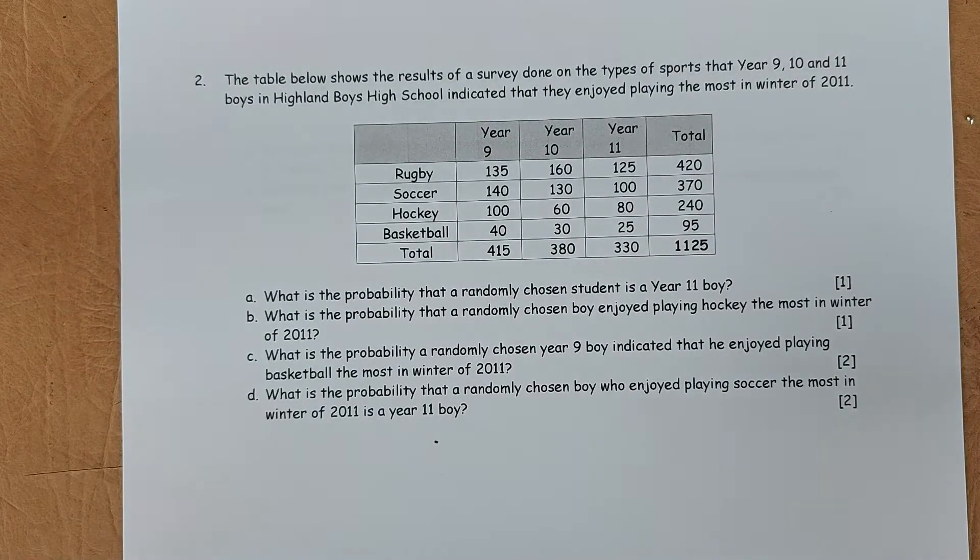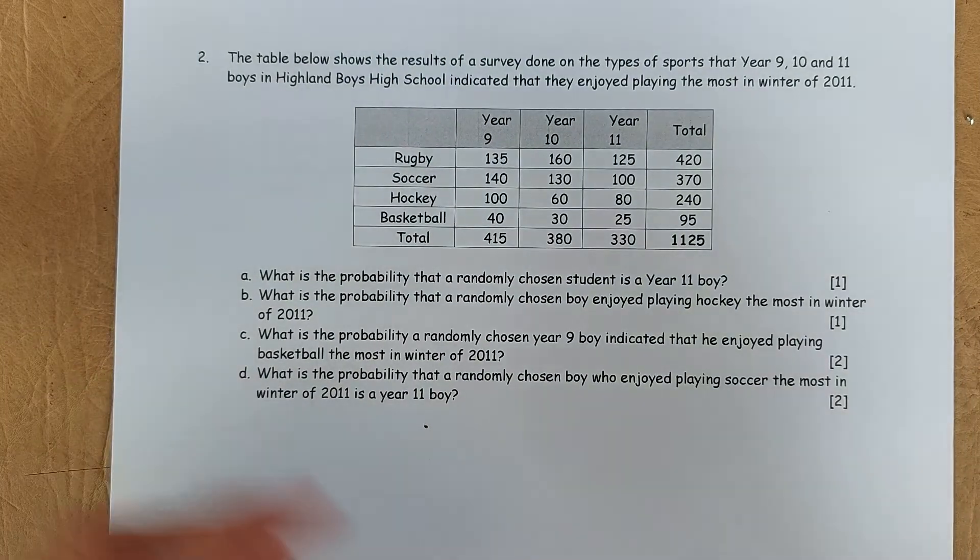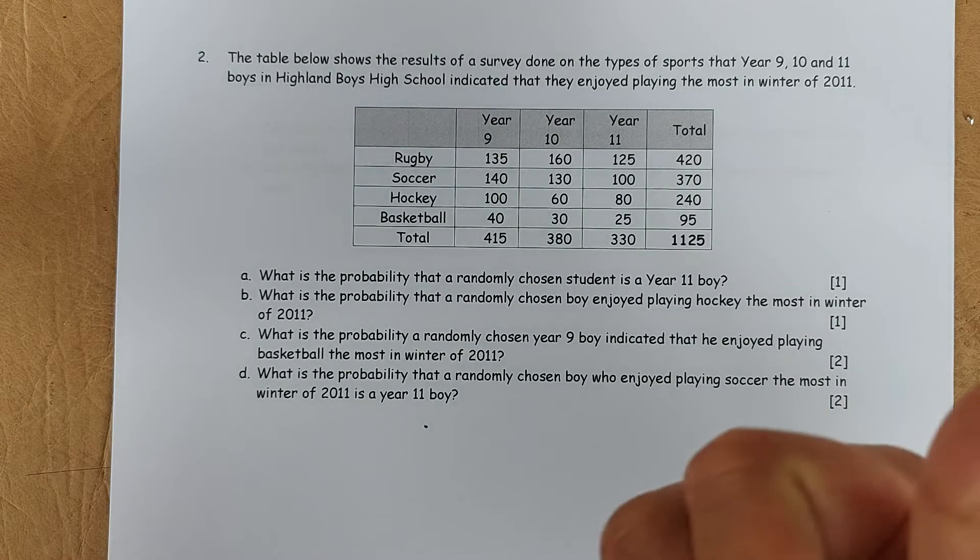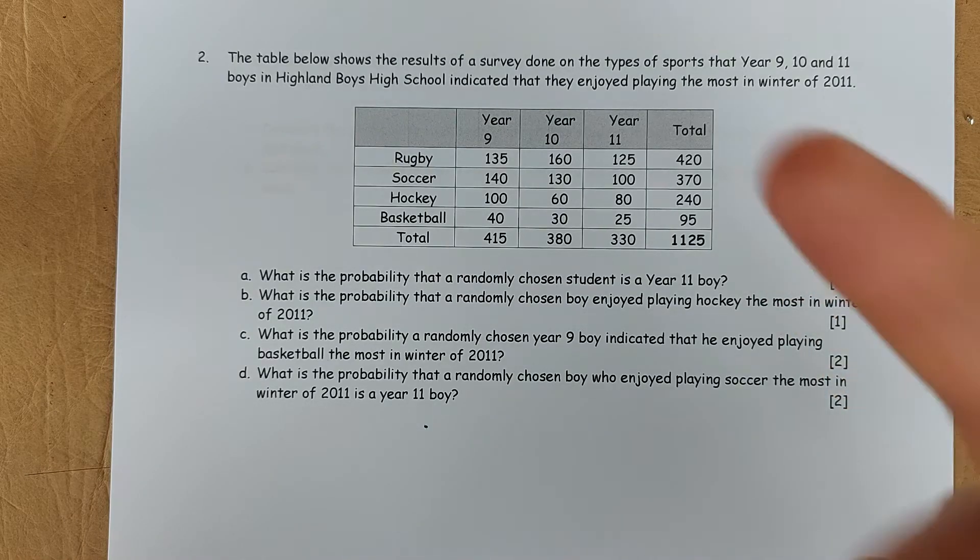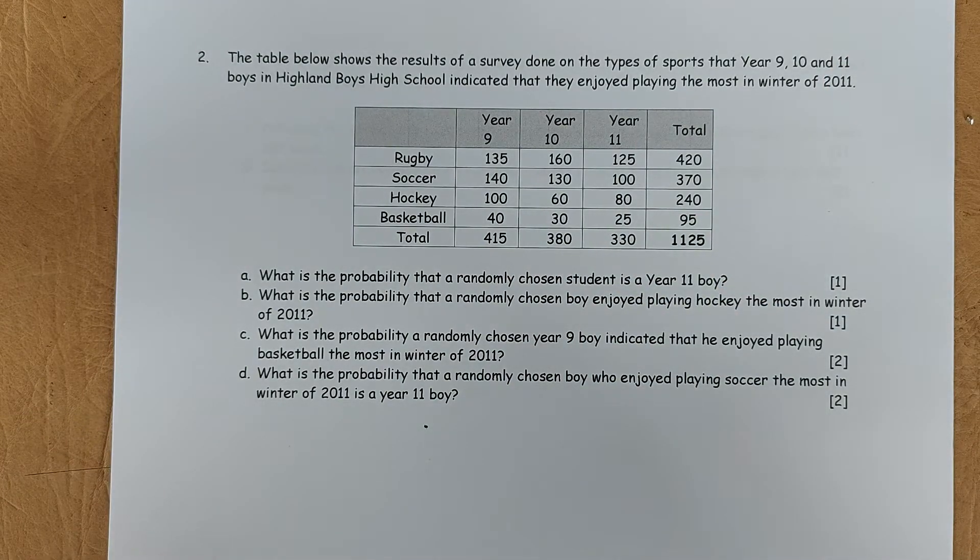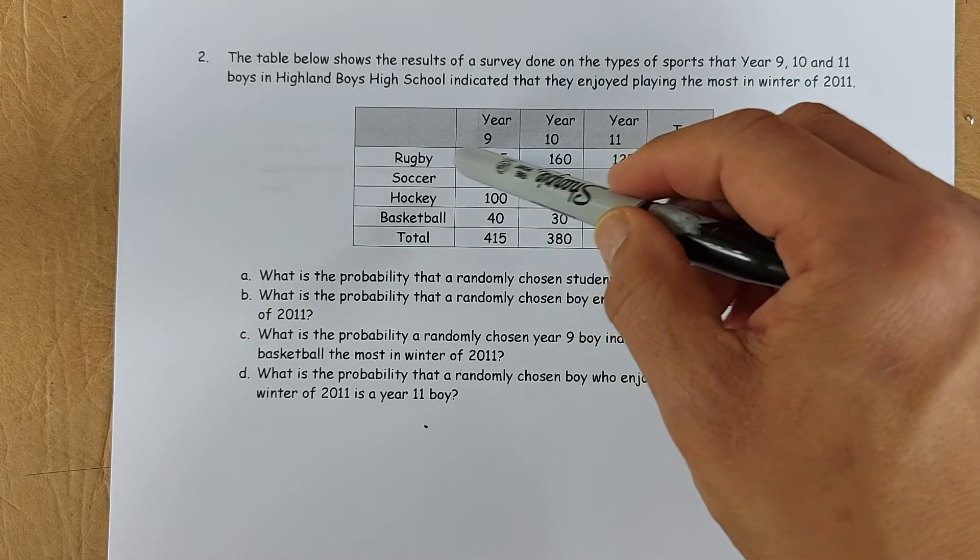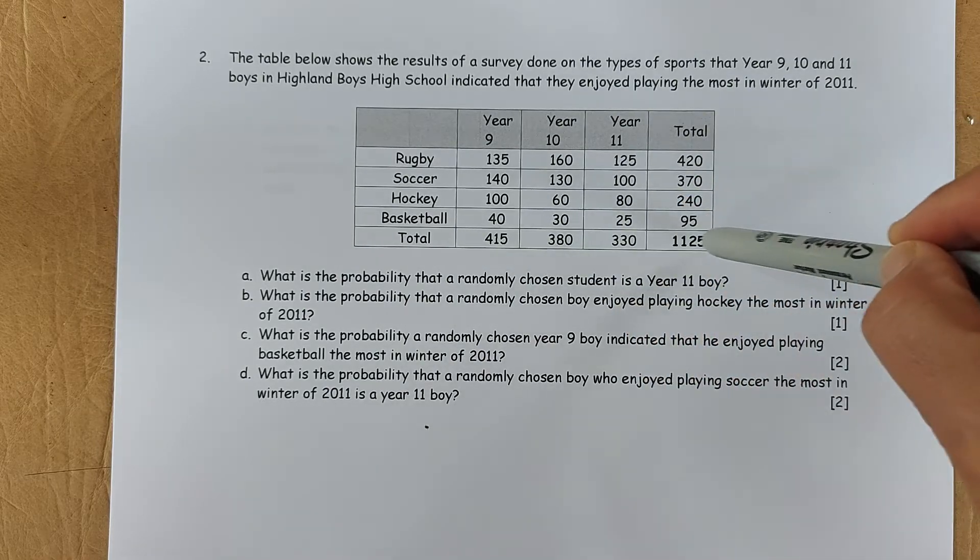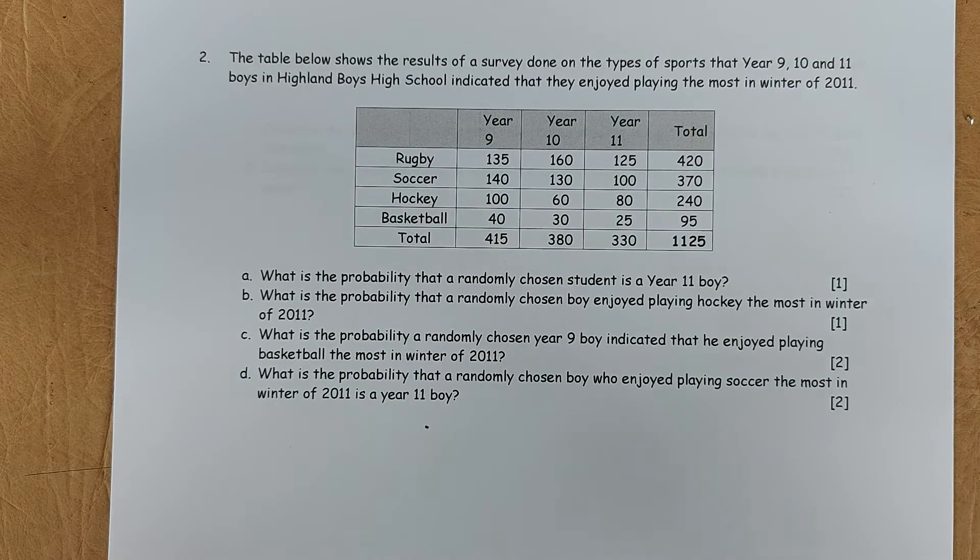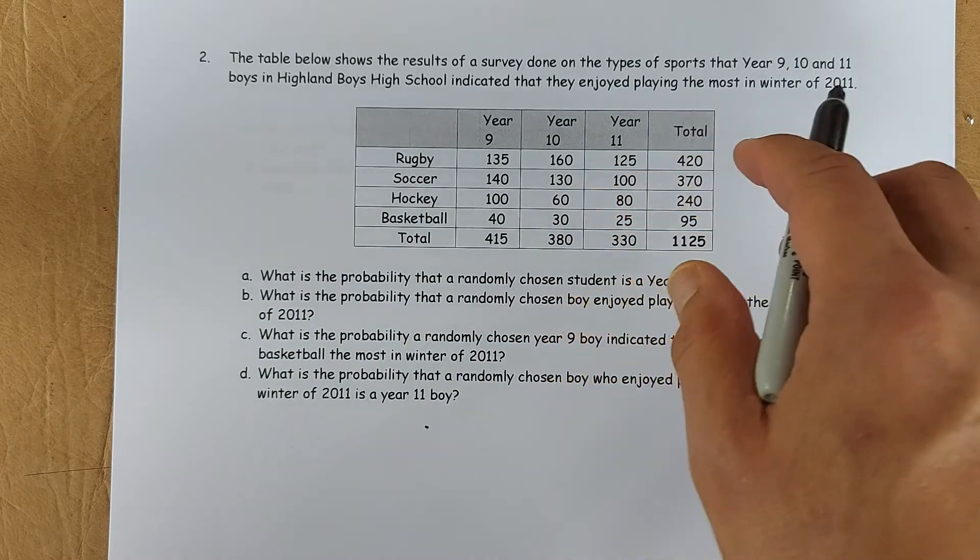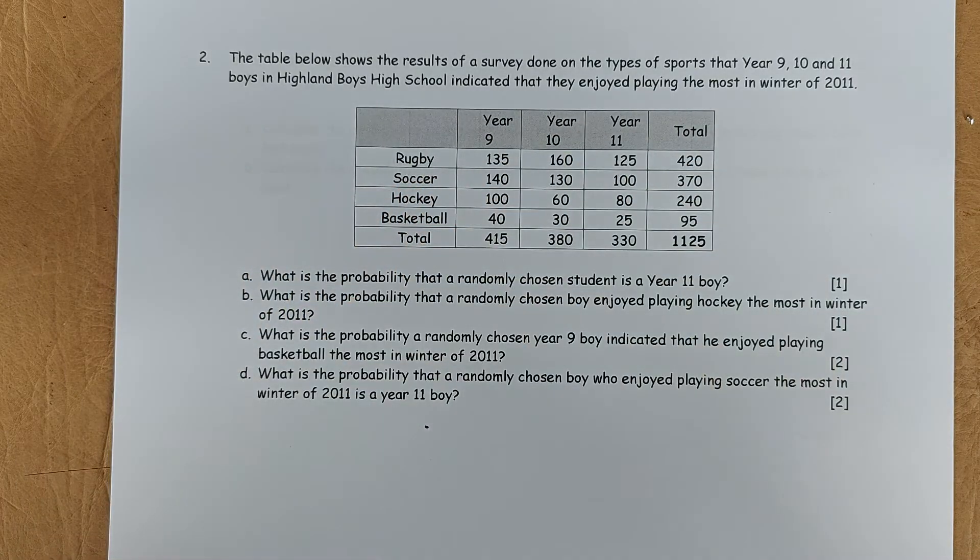Now we look at the second question. Second question is the probability from tables. In probability, 2 main items that will always appear in the probability question: either probability from tables as well as probability tree. And they will go all the way from level 1, level 2 and level 3. If you understand this, that's fine. So the first thing is to know when you have a table, you always need to add the row total as well as the column total. Either the row or the column total will add up to the total of the number of people in the study. So now, once you have this table, this shows the type of sports that year 9 and 11 in Highland Boys High School indicates that they enjoy playing the most in winter 2011.